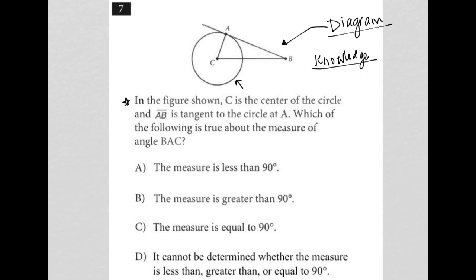But outside of that, you just have to know that whenever you have a tangent line intersecting with a radius at the point of tangency, the angle formed is 90 degrees.